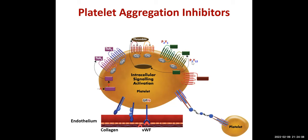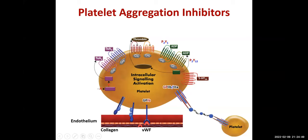P2Y12 is important because we have drugs that block these receptors. Seven-pass receptors are the G protein-coupled receptors — they pass through the membrane seven times. Then we have 5-hydroxytryptamine, which is serotonin. All of these eventually cause expression of glycoprotein 2B3A, and fibrin forms the cross-links between platelets so they stick to each other. This is the process of activation of the platelets.